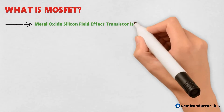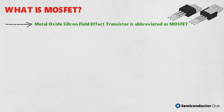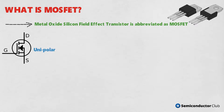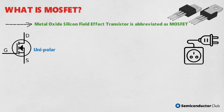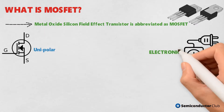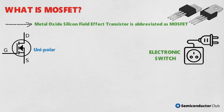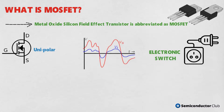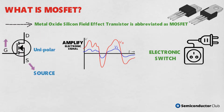Metal Oxide Silicon Field Effect Transistor is abbreviated as MOSFET. It is merely a unipolar transistor and used as an electronic switch and to amplify electronic signals. The device has three terminals consisting of a source, gate, and drain. Apart from these terminals there is a substrate, generally called the body, which is always connected to the source terminal for practical applications.